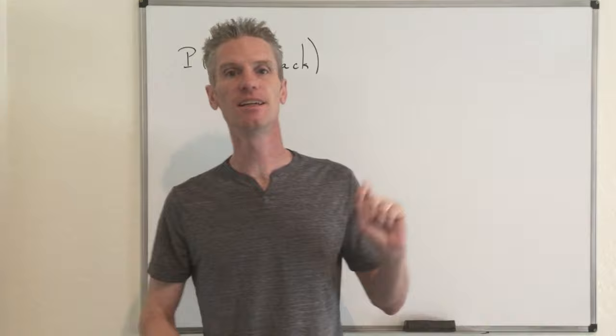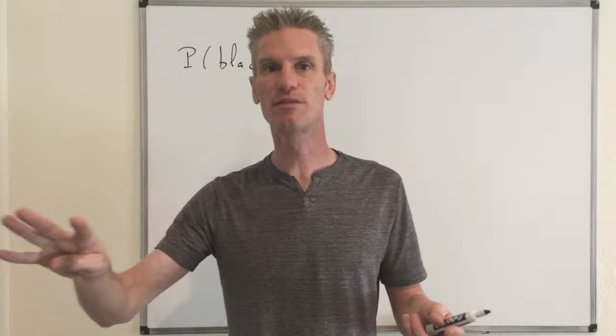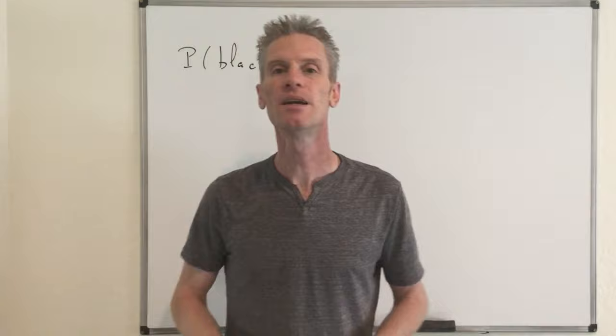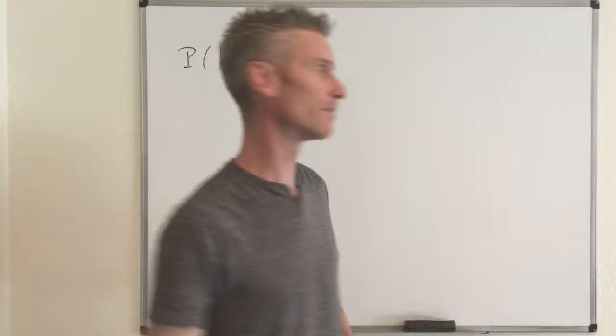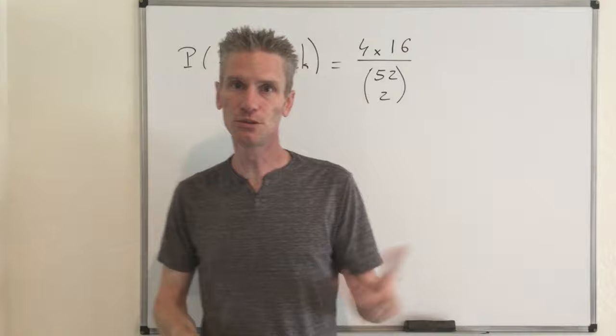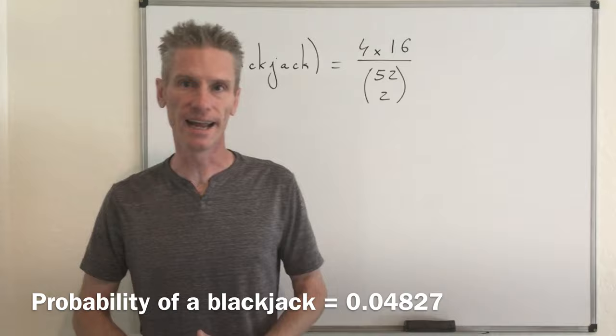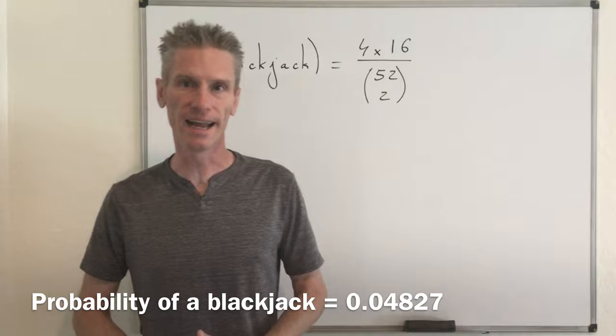The number of blackjacks is easy to compute. You need an ace — four possibilities — and then either a 10, jack, queen, or king: 4 denominations times 4 suits gives 16 possible cards. So the total number of blackjacks is 4 times 16, divided by C(52, 2) — the number of ways to take two cards from 52.